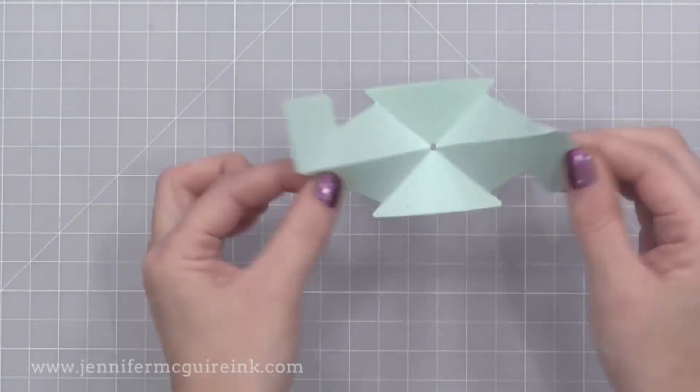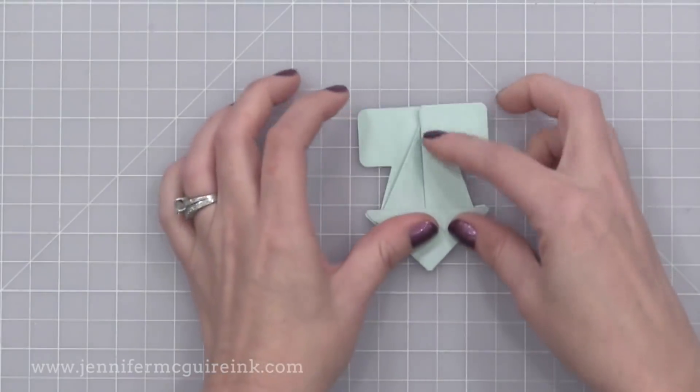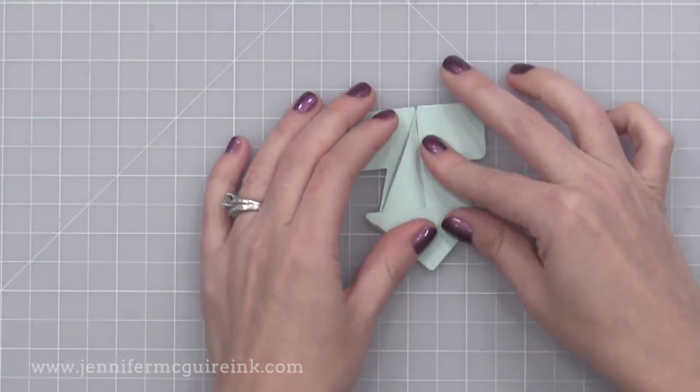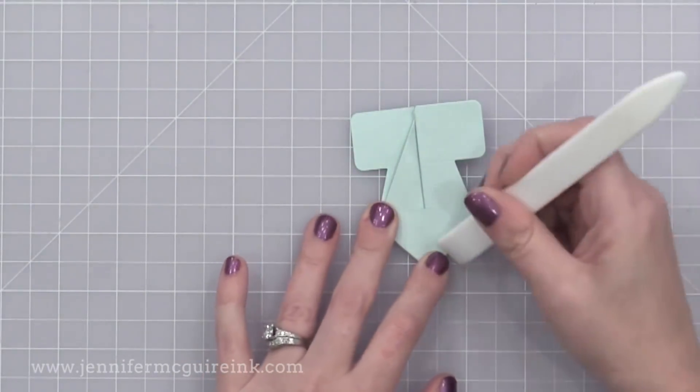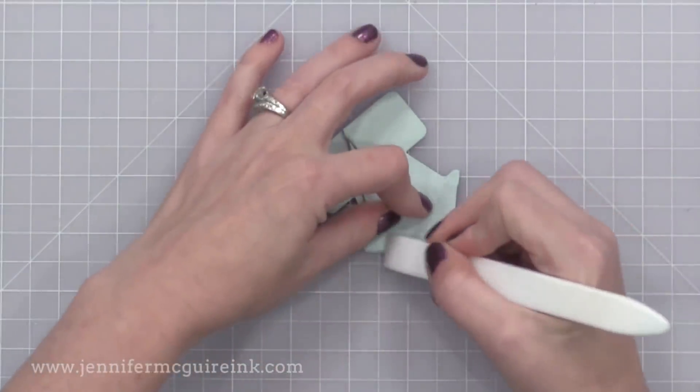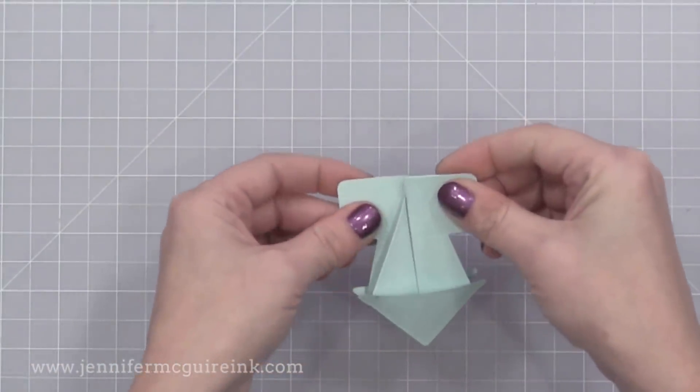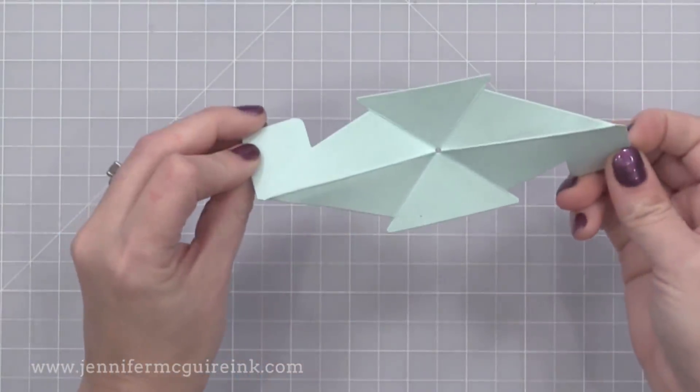And once you have them in the center touching, you're going to just fold it all down and look at what you end up with. You end up with like an arrow shape. It's kind of a funky looking shape. But this is what makes the pop up happen. And it works really well, very easy to put together.